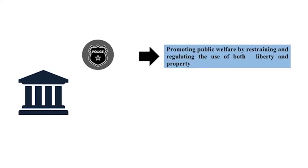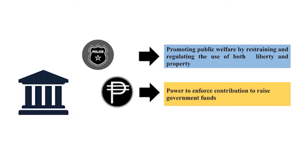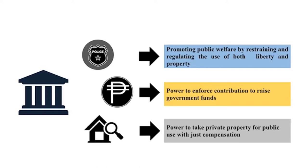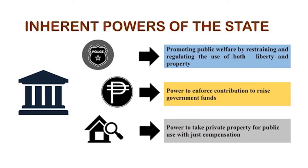These are considered the inherent powers of the state. First, the police power, which is the power to promote public welfare by restraining and regulating the use of both property and liberty. Second, the taxation power, which is the power to enforce contribution to raise government funds. Lastly, the eminent domain power, which is the power to take private property for public use with just compensation. These are inherent powers because they coexist with the state and no law or regulation is needed for them to be exercised.